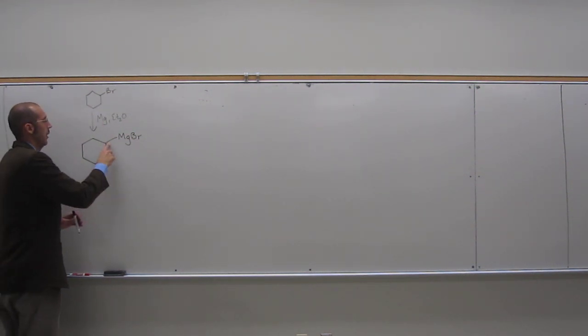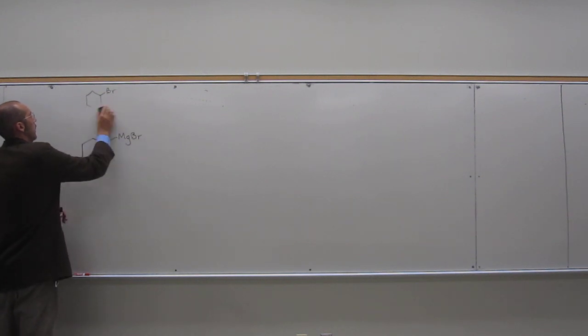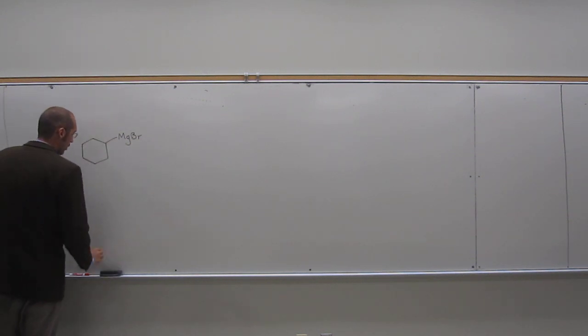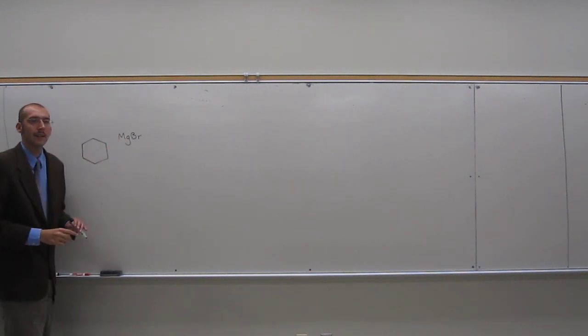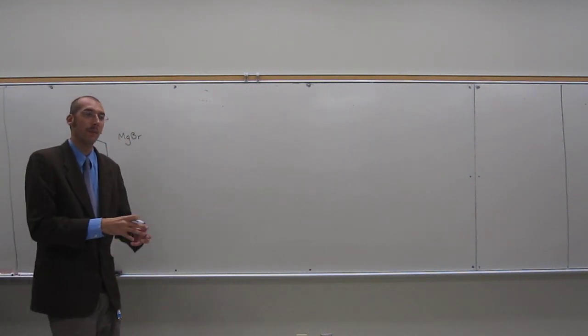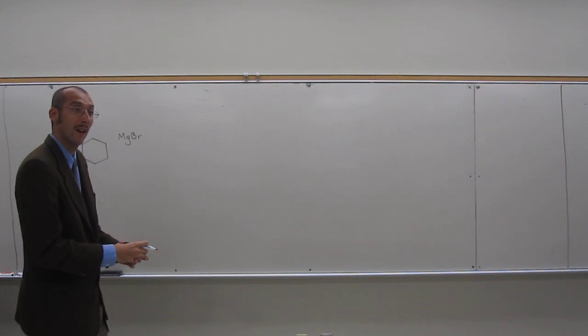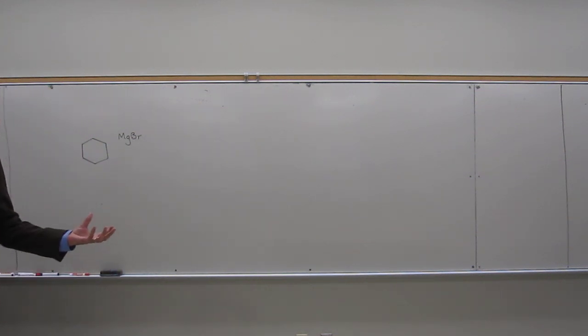So this bond here, if you recall from last chapter, you can think of it not really as a covalent bond. Even though magnesium is very small, it's also a metal, right?